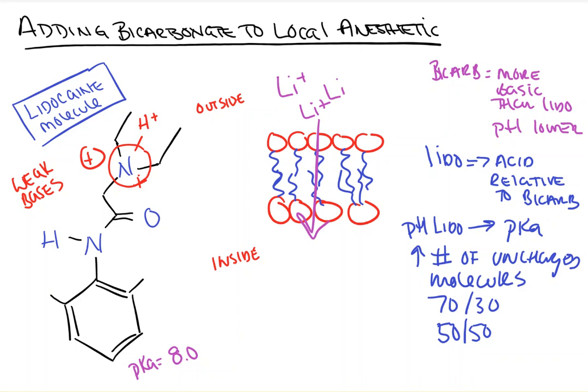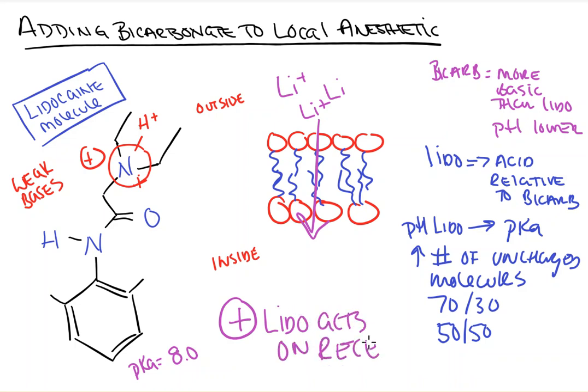Once the uncharged molecule passes through the cell membrane and enters inside, it experiences a physiologic environment at pH 7.4, and now that environment is the acid compared to lidocaine. This leads to the environment donating a proton to the lidocaine molecule, causing it to become charged again. And the charged form of the molecule is what is responsible for acting on the receptor.